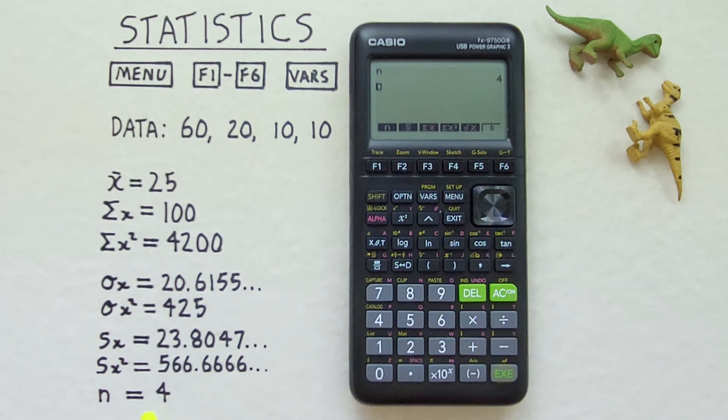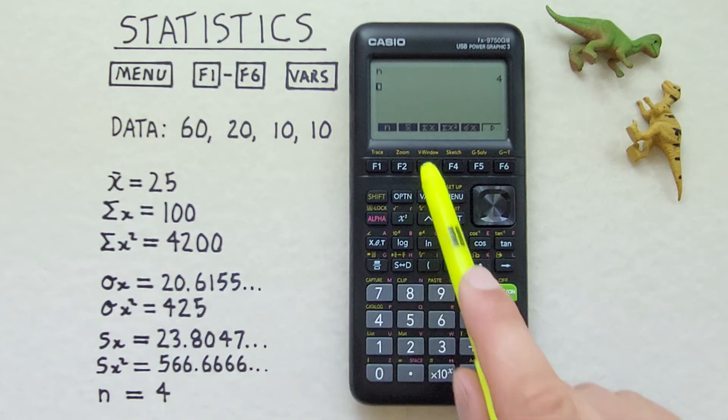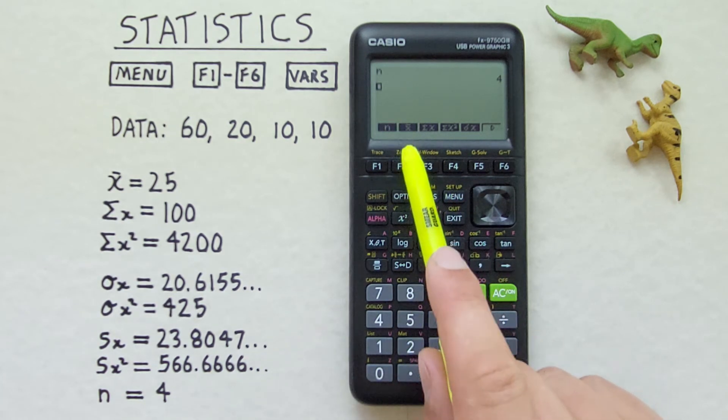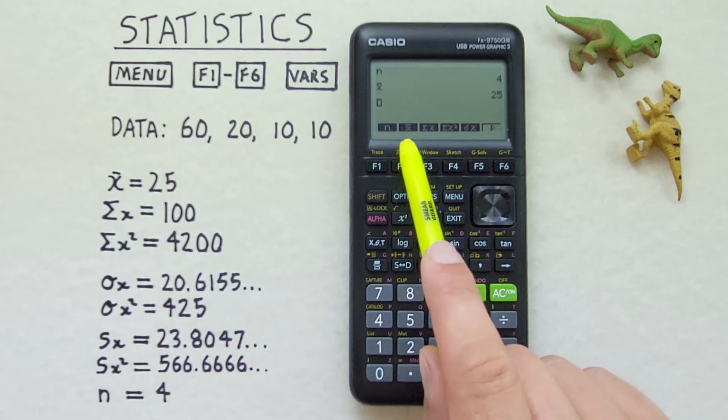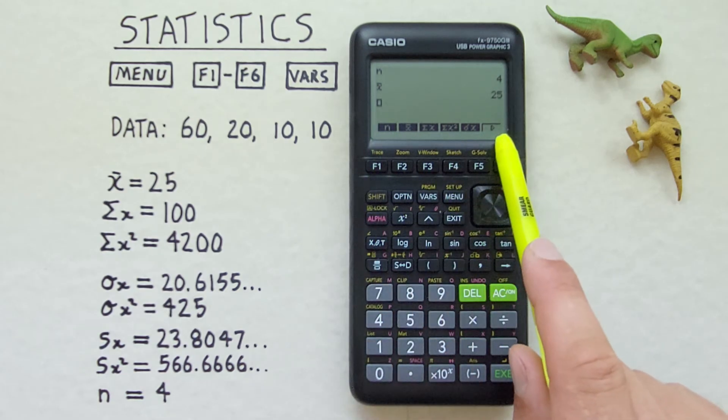So if we choose F1 for n. We see we get 4. Which is correct. If we see X bar. That's our mean. We can recall that. 25. And you can see we have a number of our statistics available to us here.